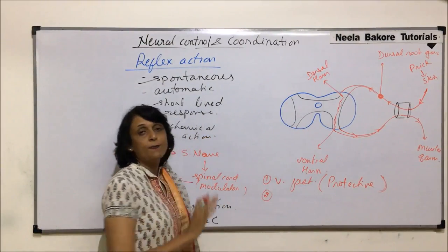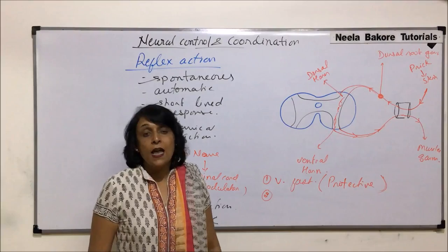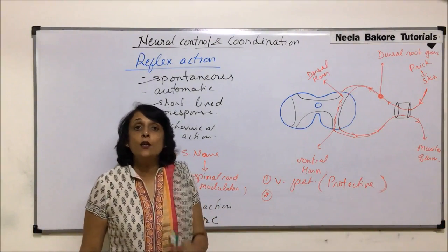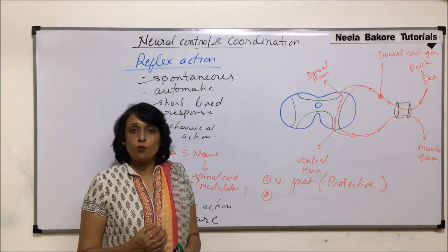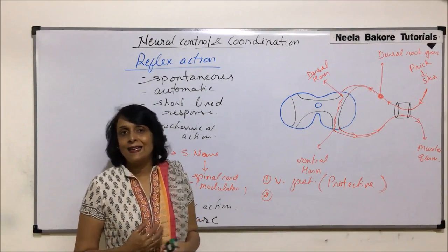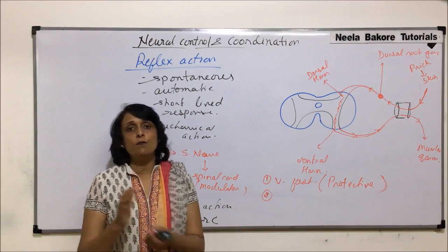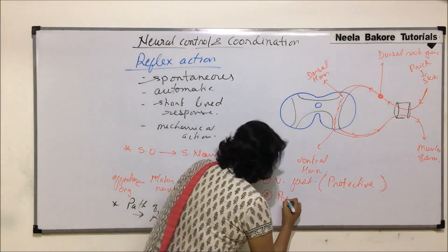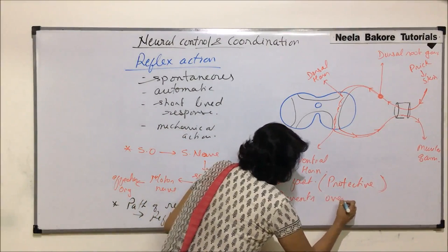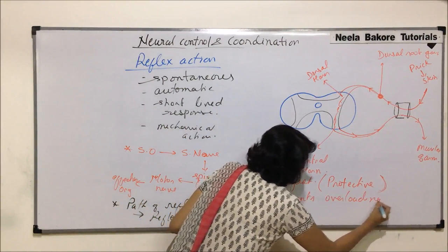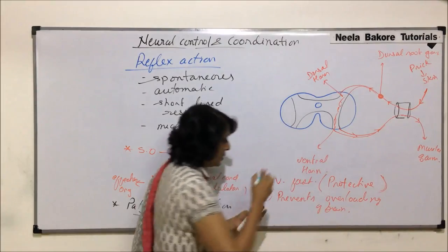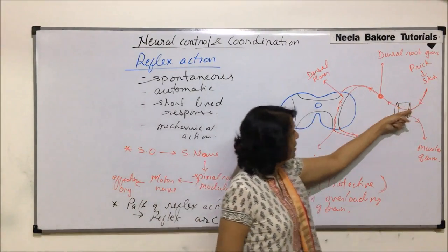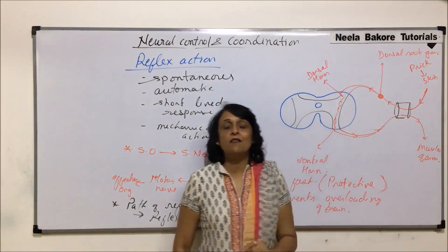The second advantage is that it is the spinal cord which deals with all these things. Imagine if all these simple responses went to the brain — the brain would get overloaded. Those responses which are quick and do not require any analysis — why should they be sent to the brain? The spinal cord is capable of performing that function. So reflex action prevents overloading of the brain. The path in which the impulse travels — from sensory organ through sensory nerve to spinal cord, then via motor nerve to effector — is known as the reflex arc.